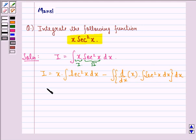This will be equal to x into, now integral of secant square x dx is tan x, minus integral of dx by dx will be 1 into tan x dx, plus a constant.